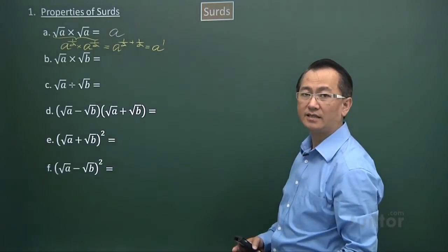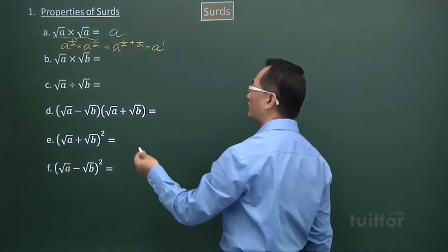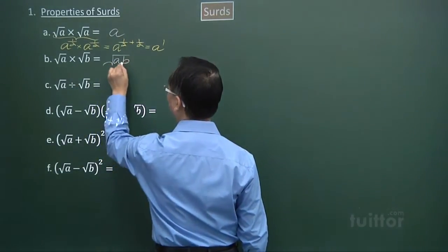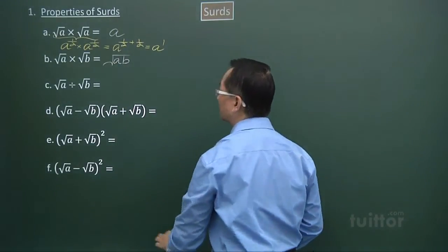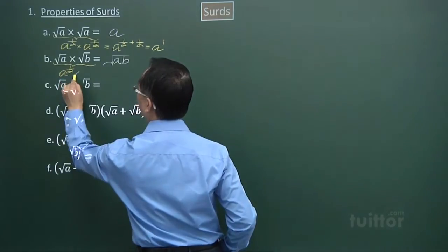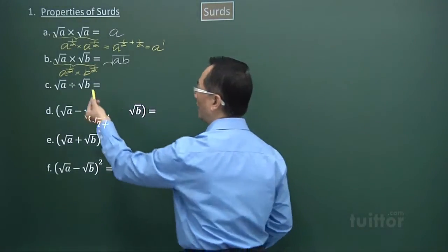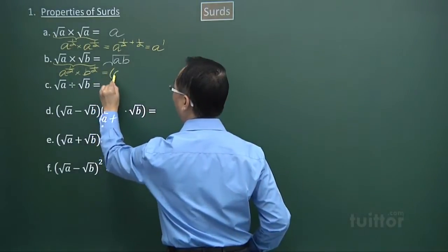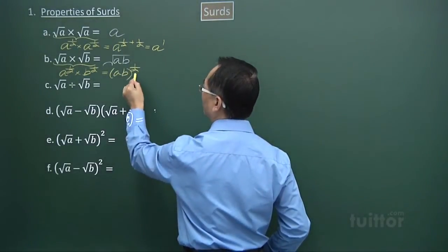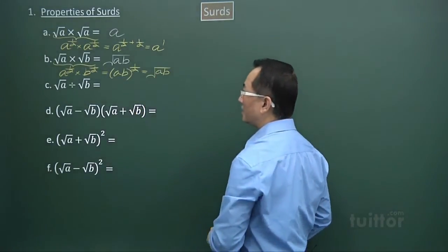For part b, we have square root a times square root b, which gives square root of a times b. Thinking in terms of the rules of indices, we have a to the power of half times b to the power of half. Since the indices are the same and we have the product of the two terms, a multiplies b raised to the same power of half, resulting in the square root of ab.